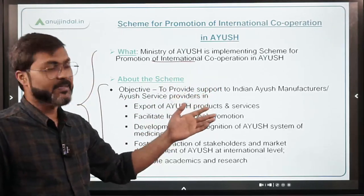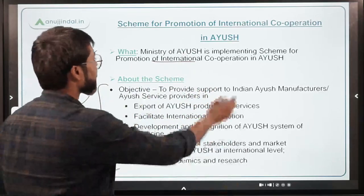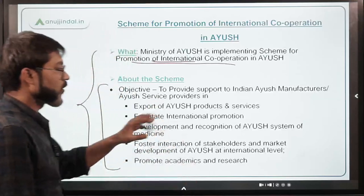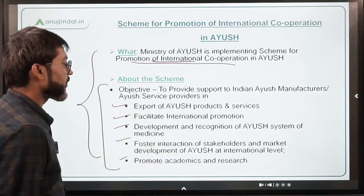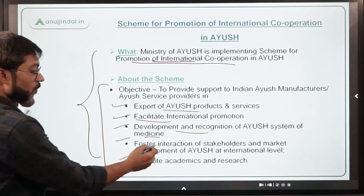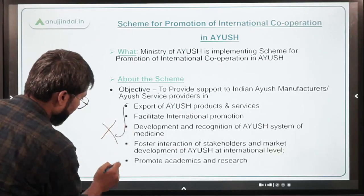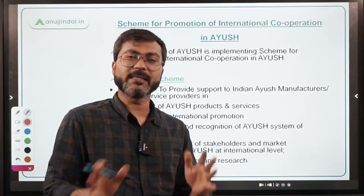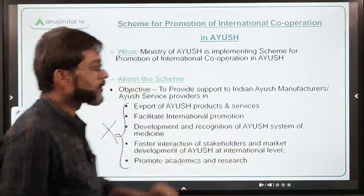As the name suggests, you can easily extract the objective and aims of a scheme from its name. The name is 'Promotion of International Cooperation in AYUSH,' so the scheme intends to promote international cooperation in AYUSH by different means. The areas of cooperation include: export of AYUSH products and services, facilitating international promotion, development and recognition of the Indian system of medicine, fostering interaction of stakeholders, and promoting academics and research.